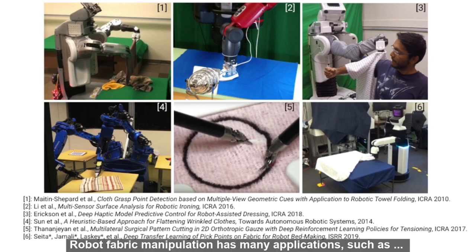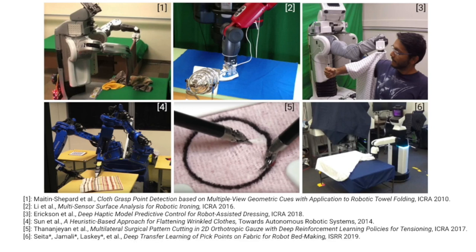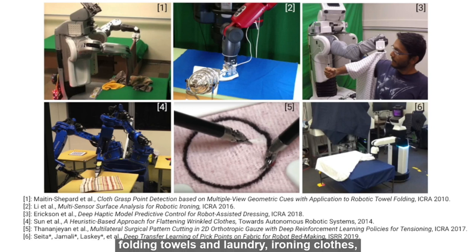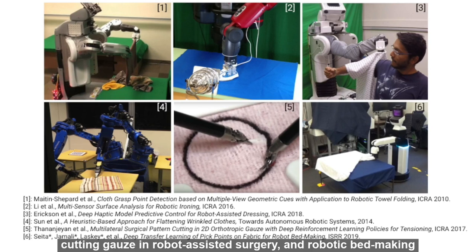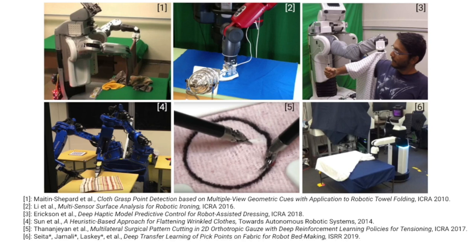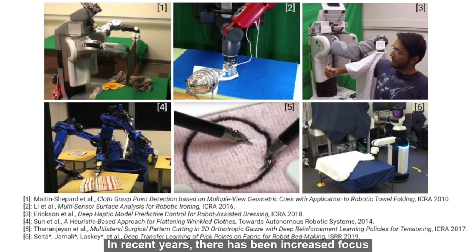Robot fabric manipulation has many applications such as folding towels and laundry, ironing clothes, assistive dressing, flattening slightly wrinkled fabrics, cutting gauze in robot-assisted surgery, and robotic bed making. In recent years, there has been increased focus on using learning-based methods for fabric manipulation.